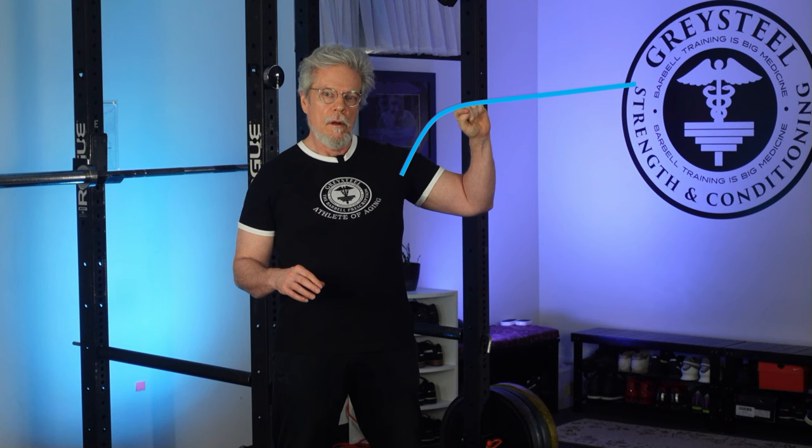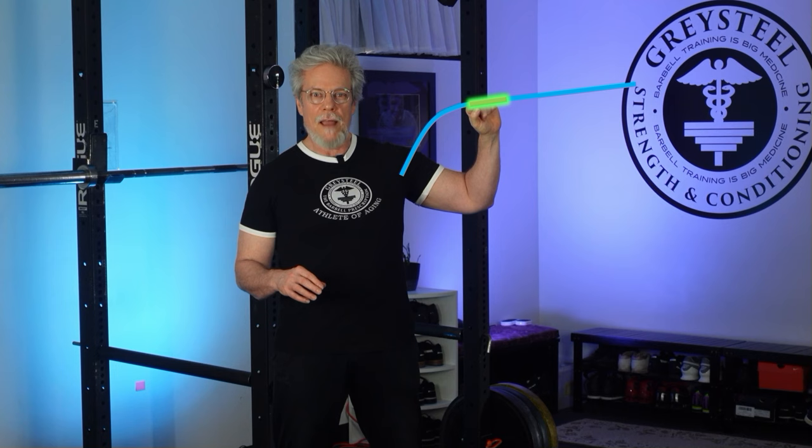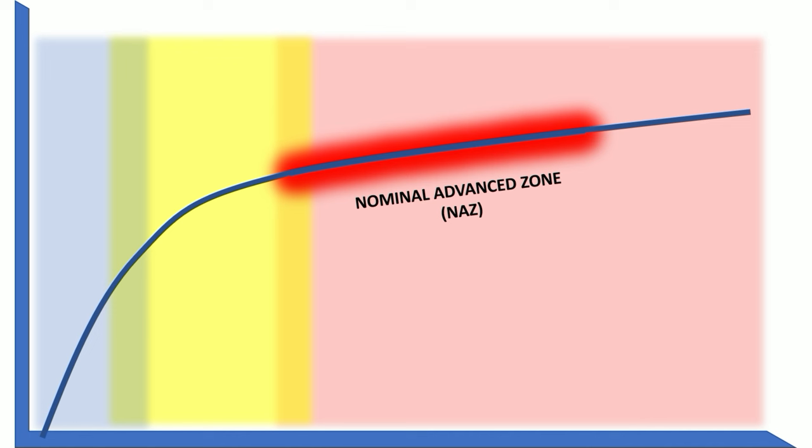Strong, established athletes will find themselves going back and forth along a short region of the training curve — toward the right when things are going well, and toward the left when life happens. We can call this the nominally advanced zone, or the NAS, for want of a better terminology at the moment.